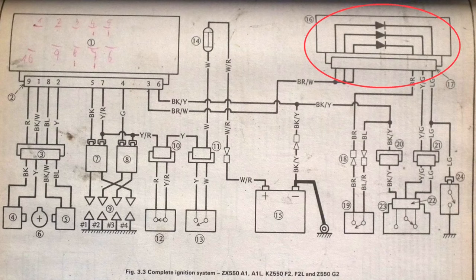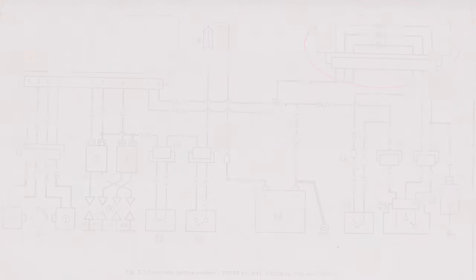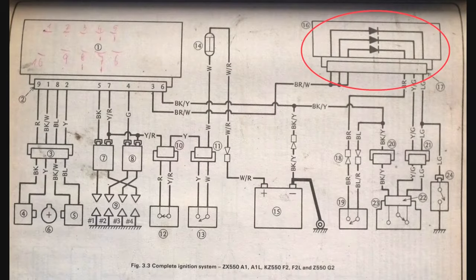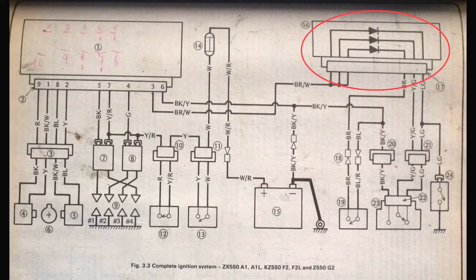Diodes are essentially one-way valves for electricity, and the diode symbol indicates which way the current will flow through. Looking at the diagram, the brown and white wire can only be connected to ground through the switches, so grounding it out should fool the igniter box into thinking all the safety interlock stuff is in safe mode and let it make sparks.